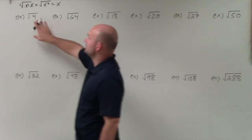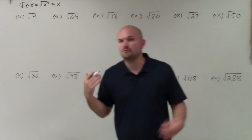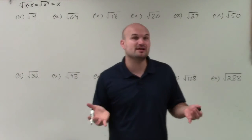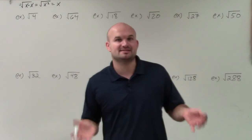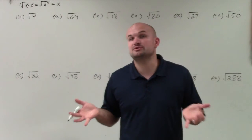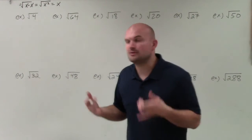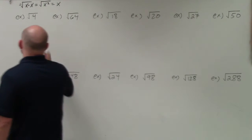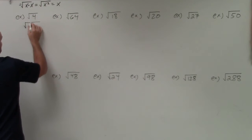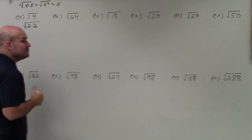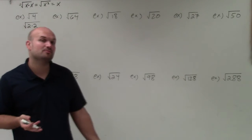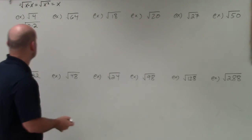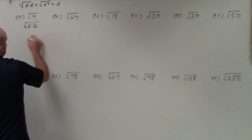So if you look at the square root of 4, we're asking: what number multiplied by itself is going to give us 4? I chose a pretty easy example. We can rewrite 4 as 2 times 2, so you can see that 2 is the number being multiplied by itself. Therefore, the square root of 4 is equal to 2.